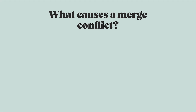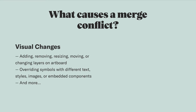The most obvious action that creates a merge conflict in Abstract is when two or more designers work on the same artboard in the same file. These are visual changes that you can see when you compare designs. Visual changes that could cause a merge conflict include, but are not limited to, adding, removing, resizing, or moving around elements on an artboard, and overriding symbols with different text or styles.